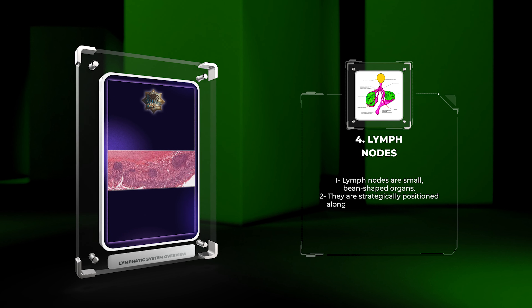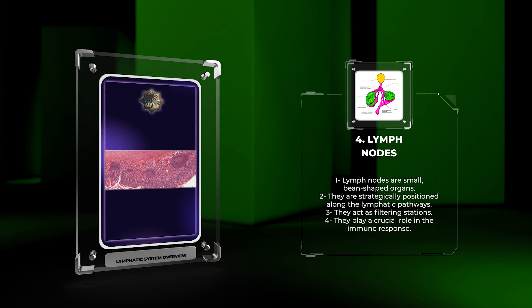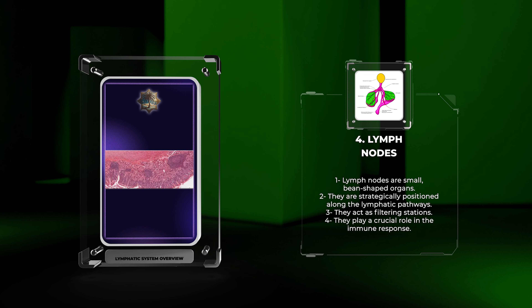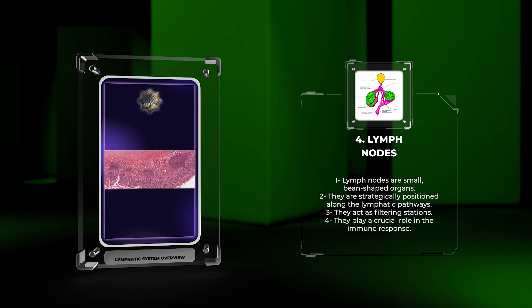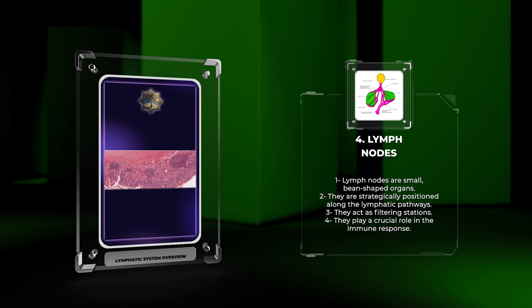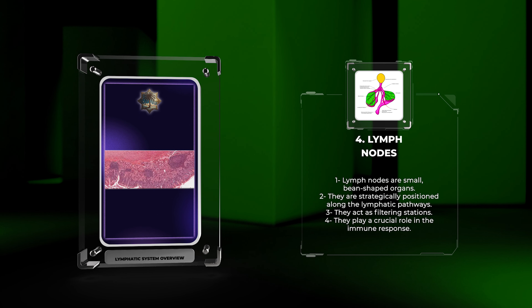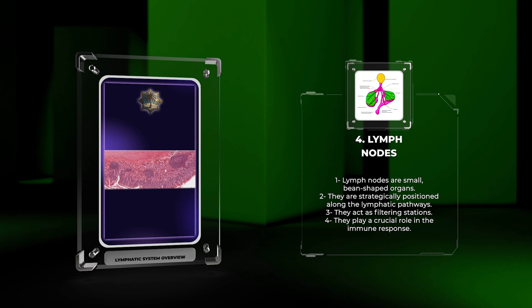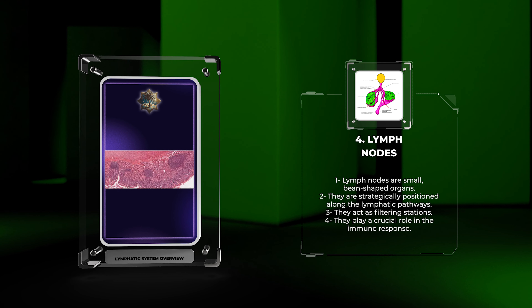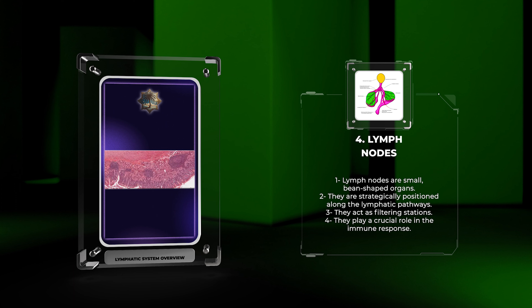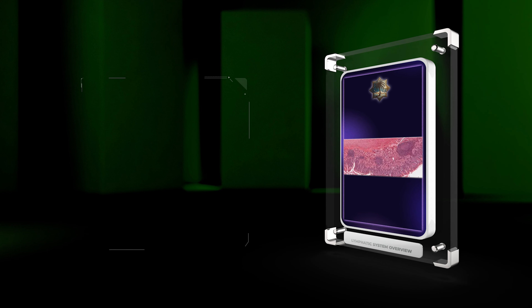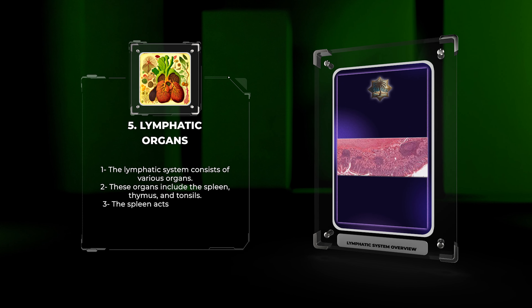Lymph nodes are small bean-shaped organs strategically positioned along the lymphatic pathways. They act as important filtering stations and play a crucial role in the immune response. Lymph nodes are composed of a fibrous capsule enclosing lymphatic tissue divided into distinct regions called the cortex and medulla. The cortex contains densely packed lymphocytes, mainly B cells, while the medulla houses antibody-producing plasma cells, macrophages, and other immune cells. Lymph nodes filter the lymph, removing foreign antigens, pathogens, and cellular debris, thereby initiating an immune response when necessary.